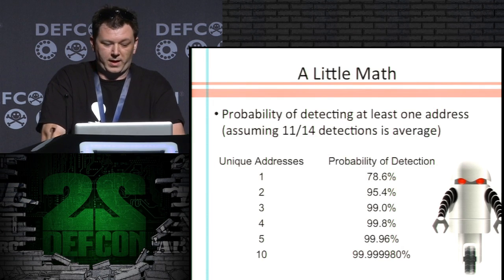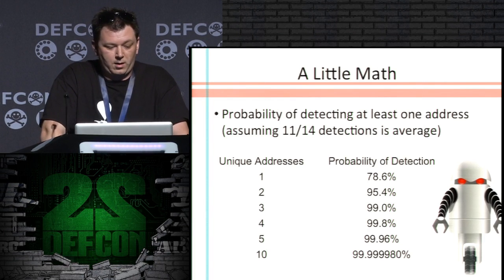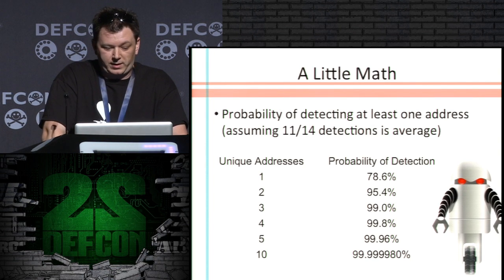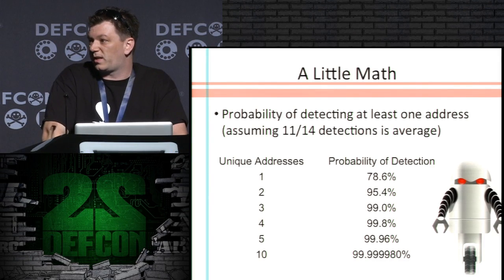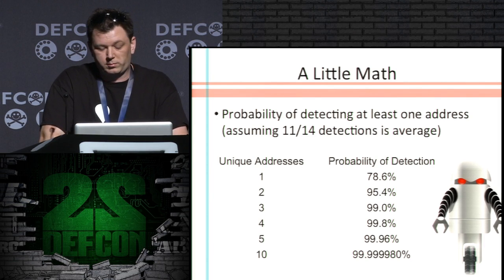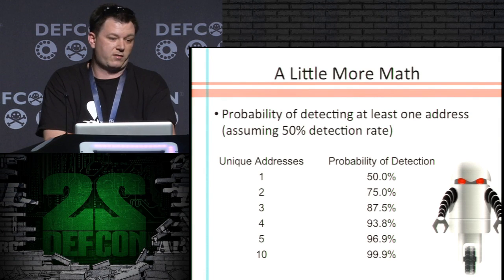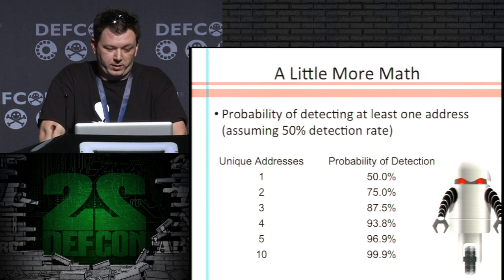Let's do a little math. How good would this work if we could get it to work in PIN? The math works out in your favor pretty quickly — even at 10 addresses, there are a lot of nines in that detection probability, which is a good thing. And let's say this might be a little optimistic — what if we drop it to 50 percent? Even at 10 addresses, you still have 99.9 percent. I was happy with that.